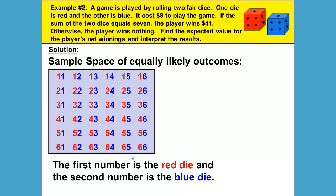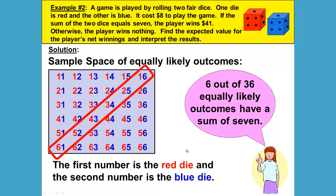The first number is the red die and the second number is the blue die. Miss Borlaug has highlighted the numbers with a sum of seven: one and six, two and five, three and four, four and three, five and two, and six and one. These numbers have a sum of seven. There are six out of the 36 equally likely outcomes that will have a sum of seven.